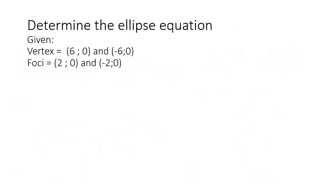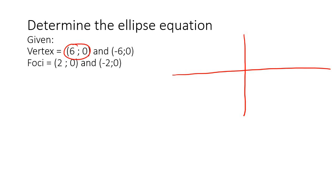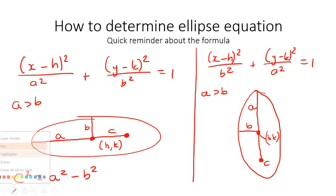Here's our first question. I'll draw this out first to give us a better idea of whether this ellipse is horizontal or vertical. They tell us that the vertex — and let's quickly go back — the endpoints on the major axis, which is always the longer one, and then there's a shorter one.